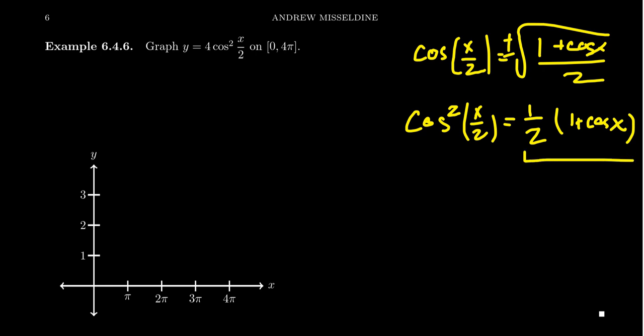For which, when you look at this over here, in terms of transformations, that's a lot easier to graph. You have a shift up by some amount, you have some type of vertical stretch. So we're going to make this substitution in for cosine right there. We get y equals 4 times one half times 1 plus cosine of x, like so.